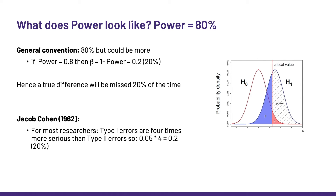The general convention is that power equals 80%. Keeping in mind the relationship between power and beta, it follows that the accepted beta is 20%, which means that a true difference can be missed 20% of the time — which is pretty high, right? And it is all because of Jacob Cohen. In 1962, this guy wrote a seminal manuscript on power, and he thought that type 1 error is the big one because it can have really nasty consequences. So he said: let's say that type 1 errors are four times more serious than type 2 ones. Then, to quantify the type 2 error, we just go 0.05 times 4 equals 0.2. Voilà.